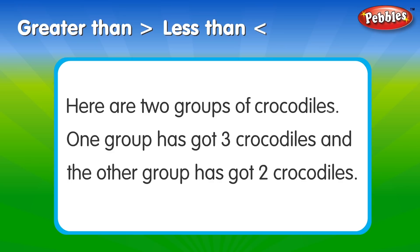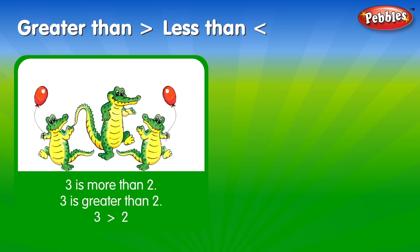Here are two groups of crocodiles. One group has got three crocodiles and the other group has got two crocodiles. Three is more than two.